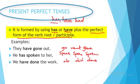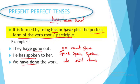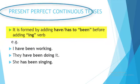'They have gone out' — present perfect tense. 'He has spoken to her.' 'We have done the work.' These are all verbs in their present perfect tenses.